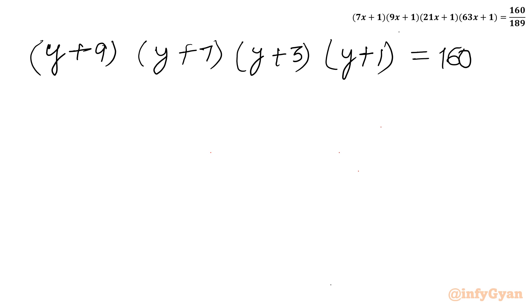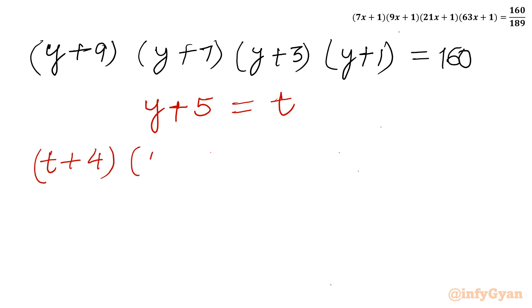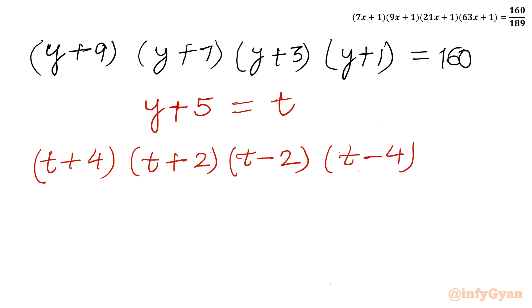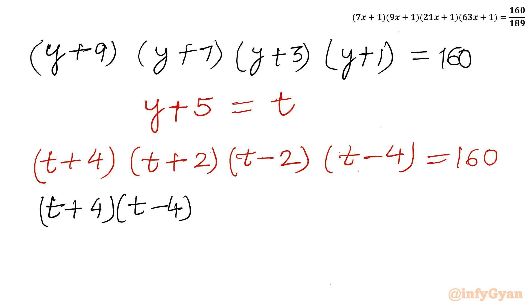Now I will consider another substitution. We have the values 1, 3, 7, 9, so the average value is y+5. Let us suppose t = y+5. Then: y+9 = t+4, y+7 = t+2, y+3 = t-2, y+1 = t-4, and the right-hand side is 160. Grouping first and last: (t+4)(t-4) times (t+2)(t-2) = 160.